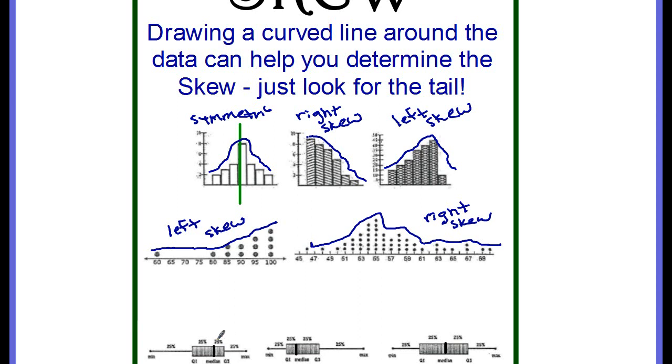And looking at the box plots, you want to look for that median line, the line that's in the middle of this box. And you can tell that the longer side goes to the left. So this would be a left skew.